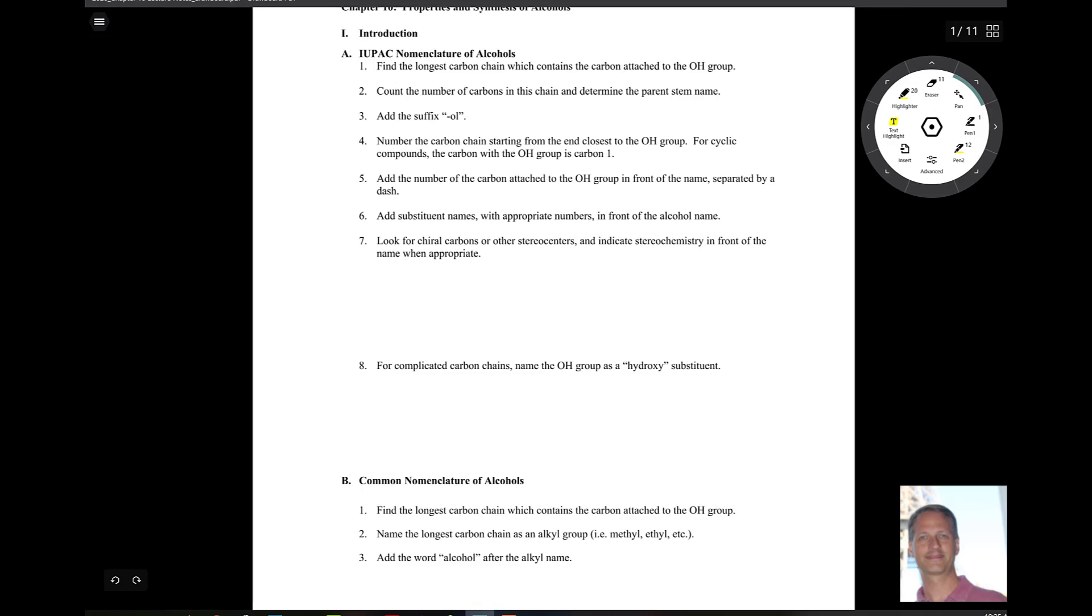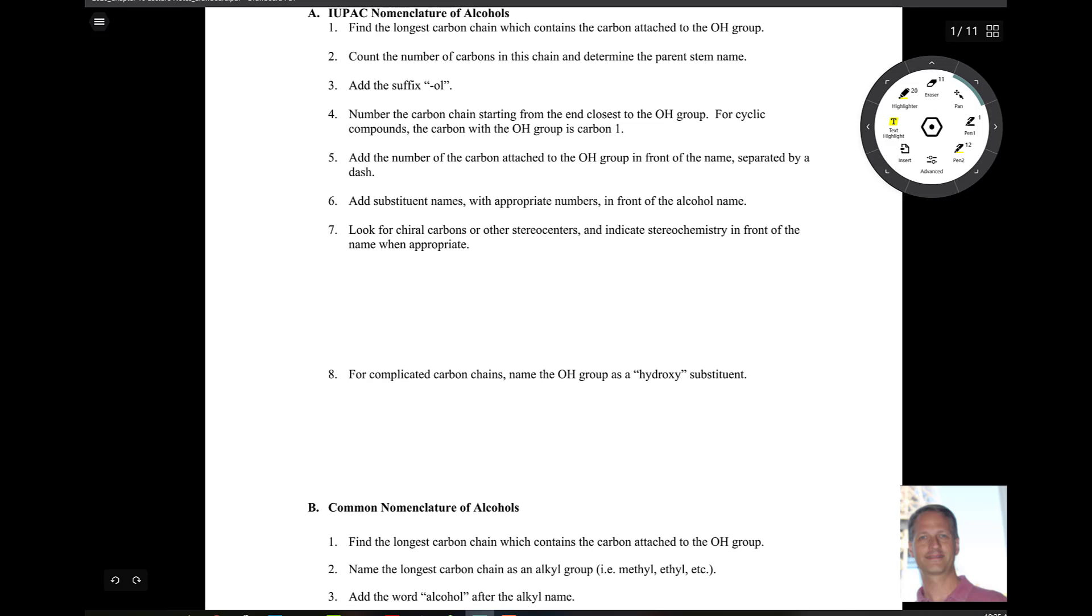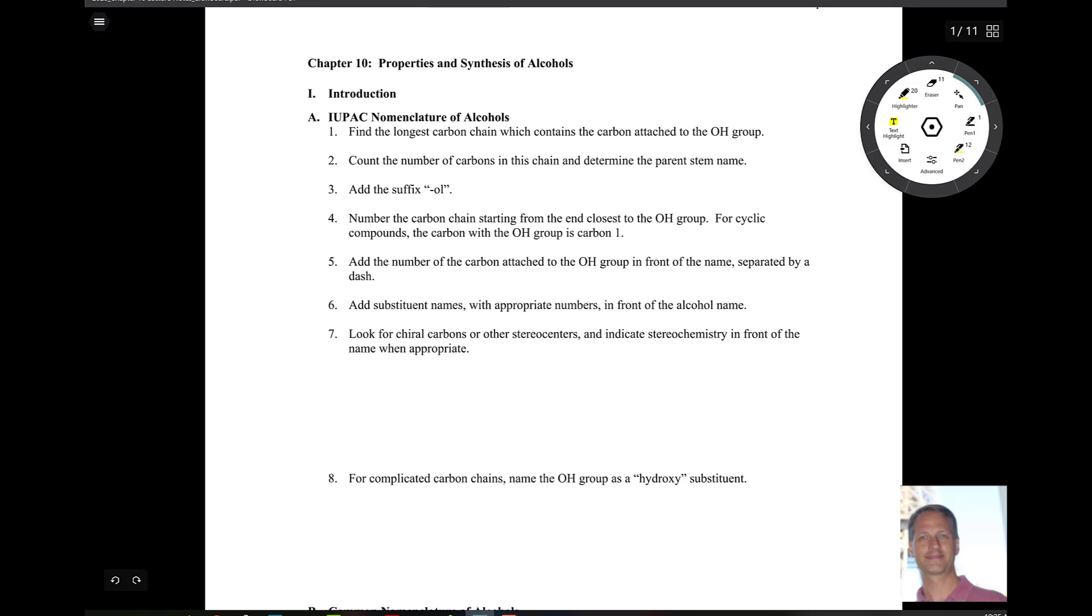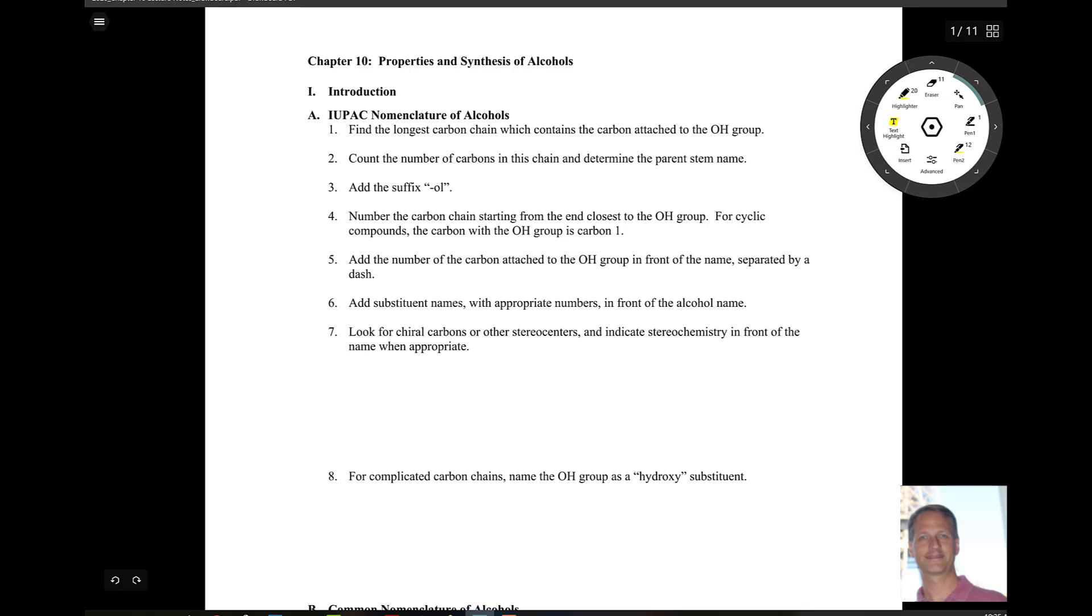Let's get started by taking a look here first at nomenclature. So nomenclature here, again, pretty simple. We're going to find the longest carbon chain that has that OH group, so it shouldn't be a big surprise. It's a functional group. Count that carbon chain, determine the parent stem name, add 'ol' because we're dealing with alcohols.